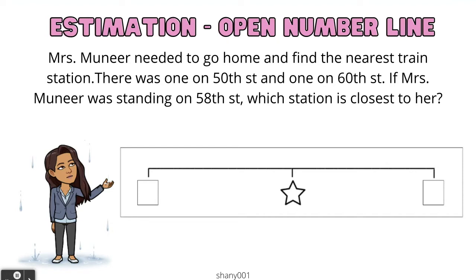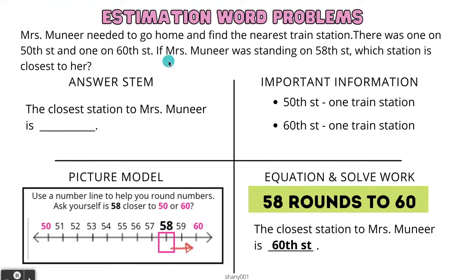Let's go ahead and use one of these strategies and solve a word problem. Mrs. Muneer needed to go home and find the nearest train station. There was one on 50th Street and one on 60th Street. If Mrs. Muneer was standing on 58th Street, which station is closest to her? Let's use a problem-solving model. Our answer stem is: the closest station to Mrs. Muneer is — and that's what we're trying to find.